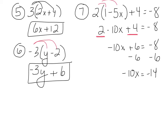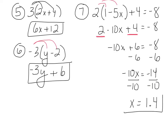Now get rid of times negative 10. The opposite of multiplying by negative 10 is dividing by negative 10. Remember, your integers are review here. A negative divided by a negative is a positive. 14 divided by 10 is 1.4, so x equals 1.4.